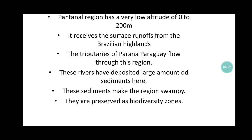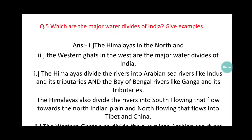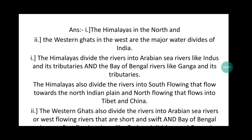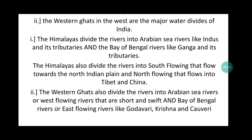The fifth question: which are the major water divides of India? Give examples. The Himalayas in the North and the Western Ghats in the West are the major water divides of India. The Himalayas divide the rivers into Arabian Sea rivers like the Indus and its tributaries, and Bay of Bengal rivers like the Ganga and its tributaries. The Himalayas also divide rivers into south-flowing rivers towards the North Indian Plains and north-flowing rivers that flow into Tibet and China.